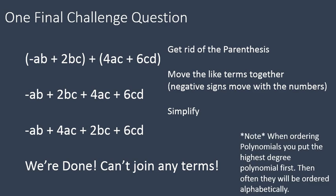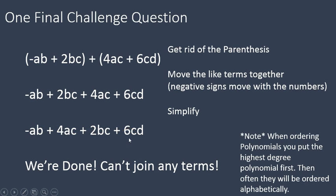I also want to add one note: when you're putting polynomials in order, you usually start with the highest degree polynomial — and if you need to check out the degrees of polynomials, that's a different lesson. But you put the highest degree first, then you order them alphabetically. So oftentimes you'll see variables just ordered alphabetically. You can see that in this example: negative ab, ac, bc, and cd — just put in order alphabetically. Normally the x's come before the y's.